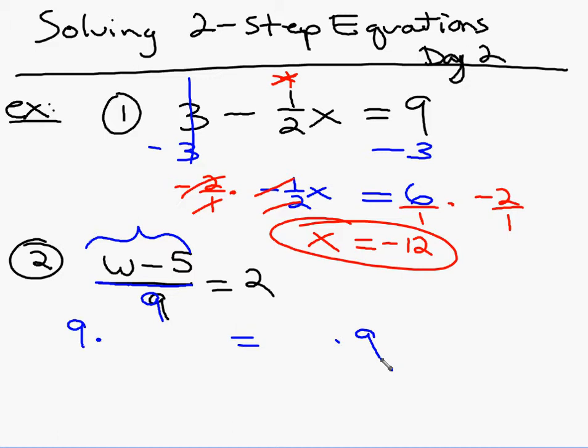Now watch how this works on the left side. I bring down what I've got here, w minus five over nine, and on the right side I bring down the two. Of course the right side is going to be easy, that's going to be eighteen. Now watch on the left side. The left side acts just like a regular fraction.